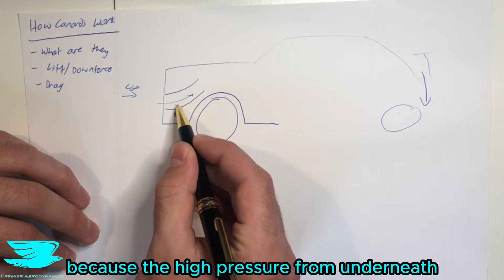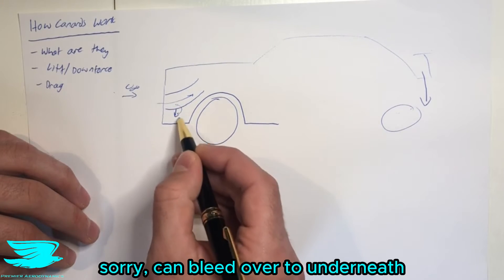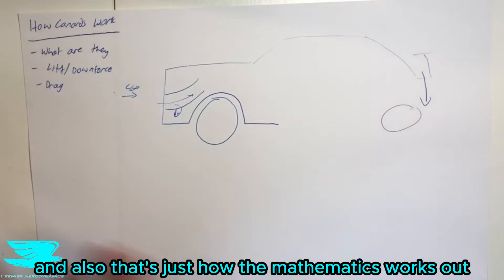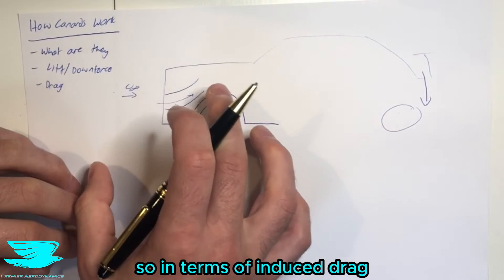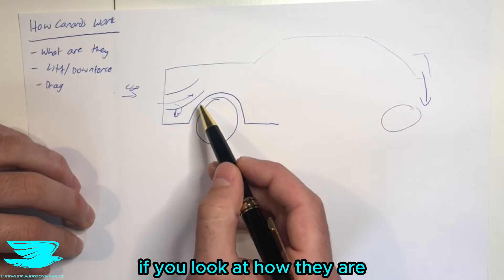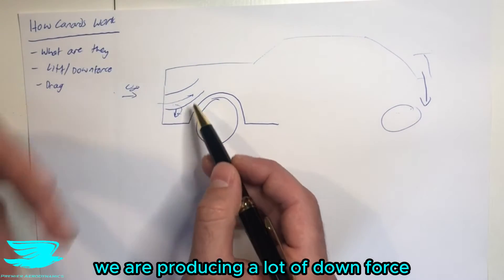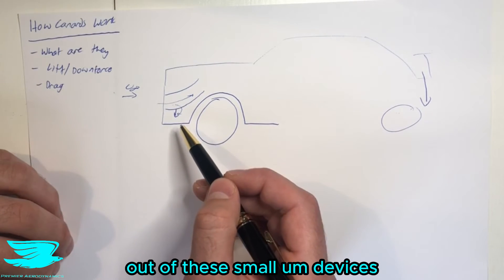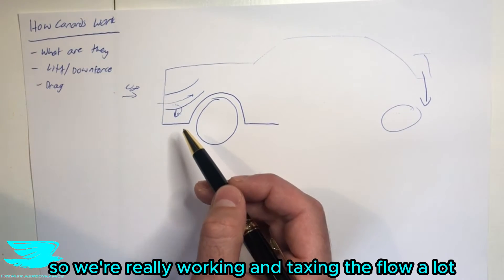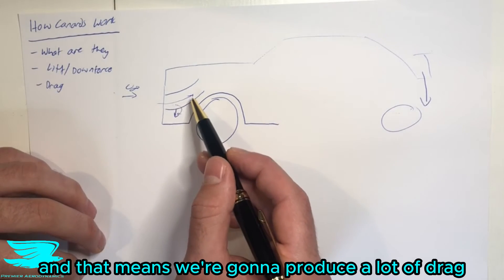because the high pressure from underneath can bleed over to on top—sorry, can bleed over to underneath, and produce vortices, and also just how the mathematics works out. So in terms of induced drag, they are not great that way. Secondly, if you look at how they are producing downforce, we are producing a lot of downforce out of these small devices. So we're really working and taxing the flow a lot, we're taking a lot of energy out of the flow. And that means we're going to be producing a lot of drag.